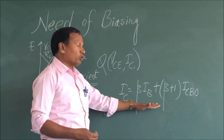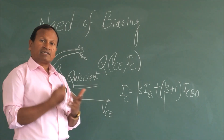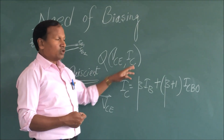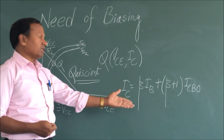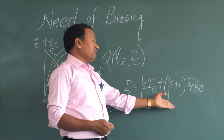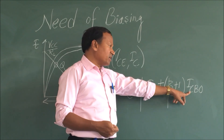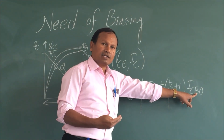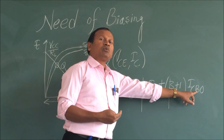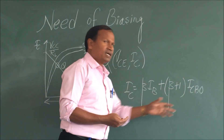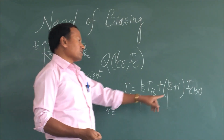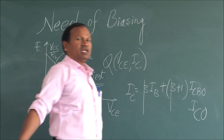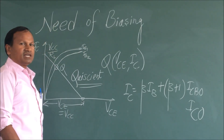Let us understand what are the factors which cause variation in collector current IC. We know the popular equation in BJT: IC equals beta times IB. There are two junctions in BJT — the emitter-base junction and the collector-base junction. We can write IC based on these. The question is: how do we get the collector current IC? There are three point factors.